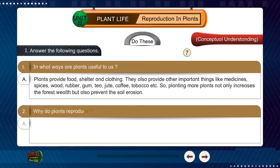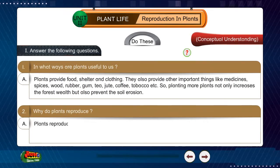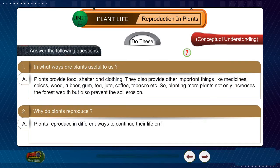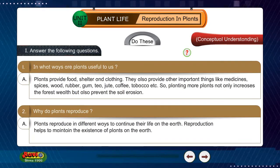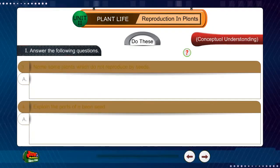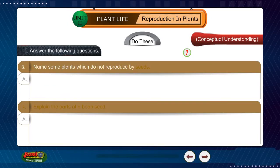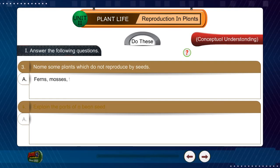Question 2: Why do plants reproduce? Answer: Plants reproduce in different ways to continue their life on the earth. Reproduction helps to maintain the existence of plants on the earth. Question 3: Name some plants which do not reproduce by seeds. Answer: Ferns, mosses,